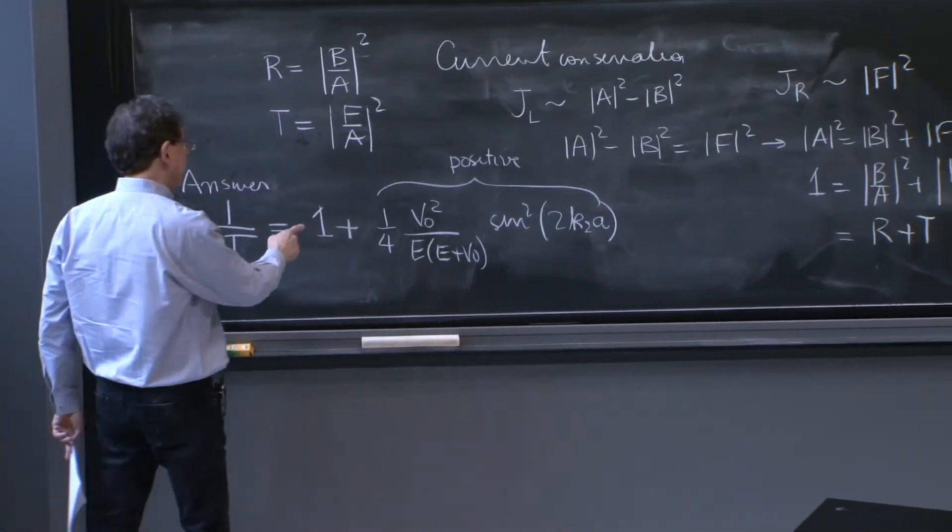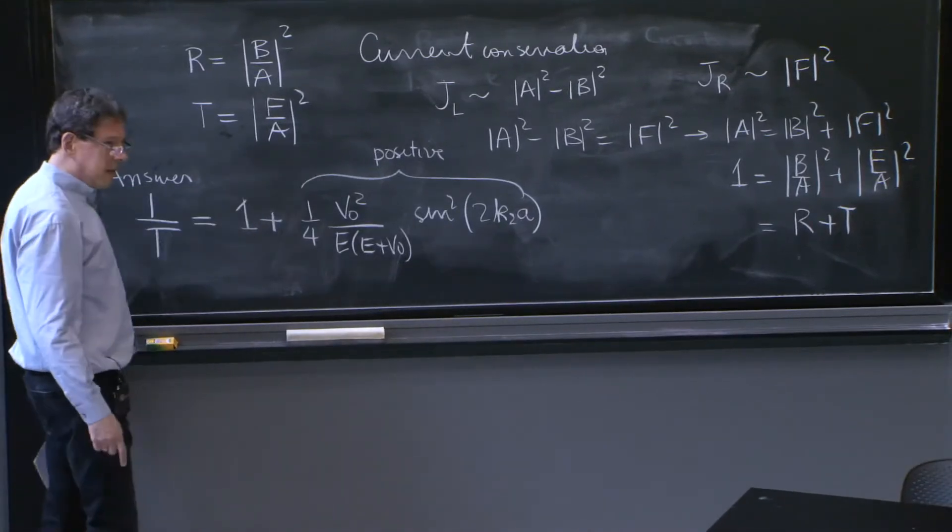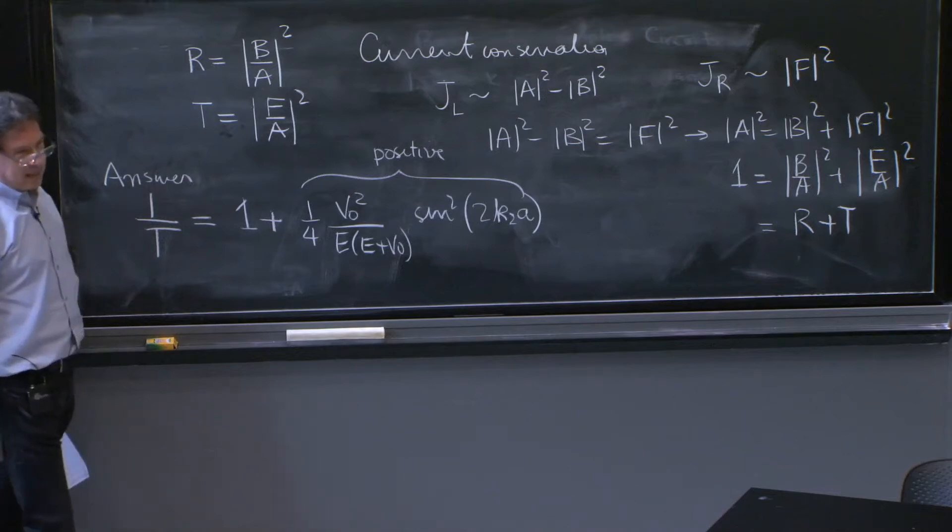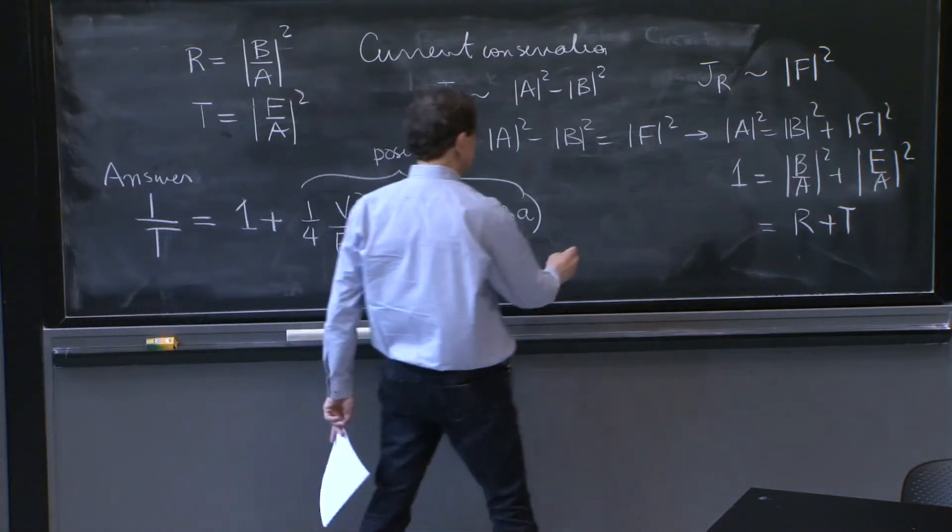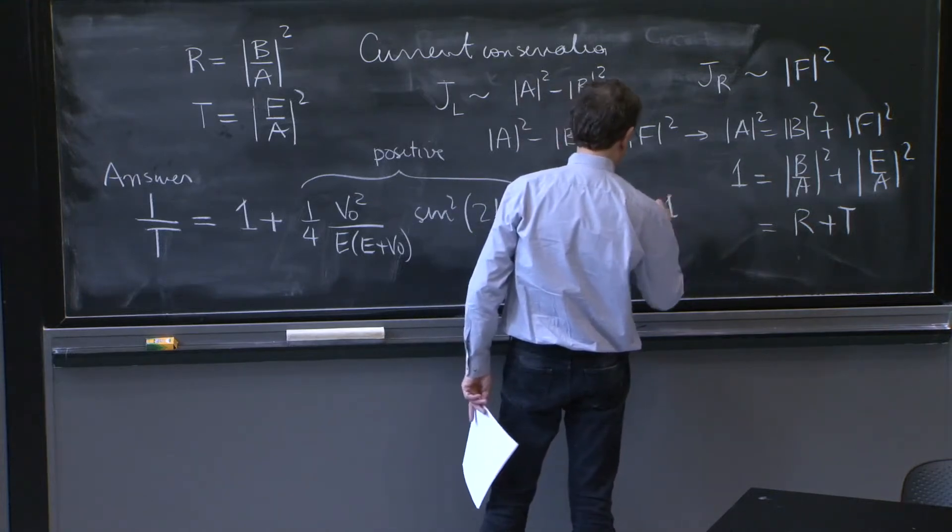So if this is positive, the right hand side is greater than 1, and therefore t is less than 1. So this implies t less than or equal to 1.